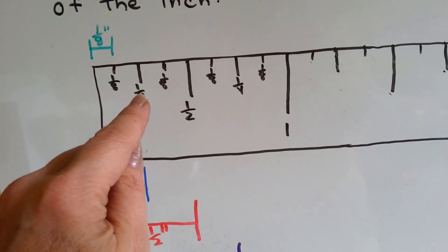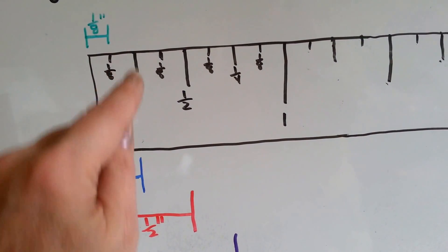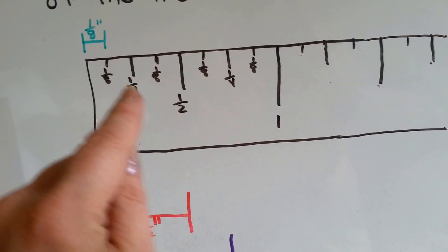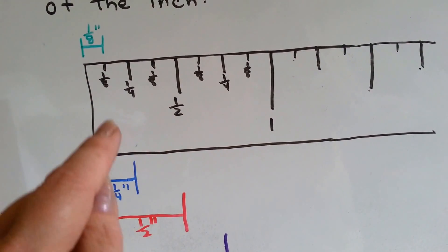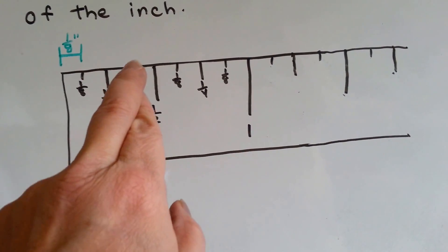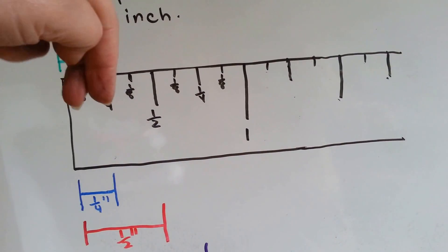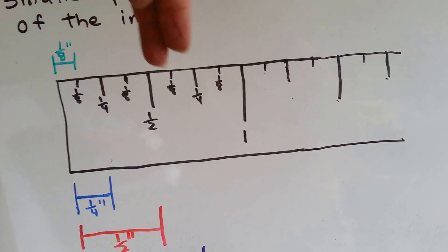The next smallest one is the fourth inch, and that's this blue one. Two of those make a half inch. There's four of them in an inch. One, two, three, four. See, there's four quarter inches.